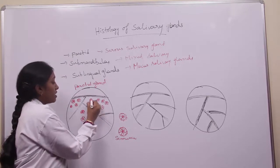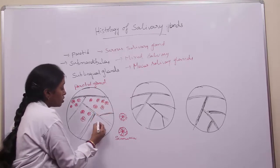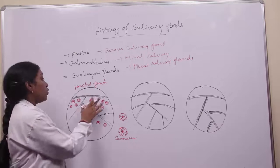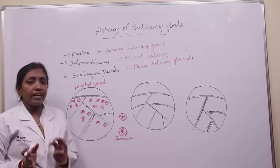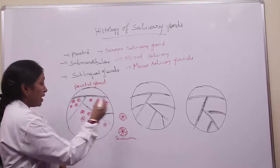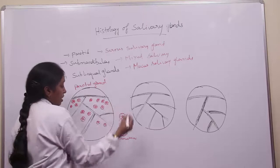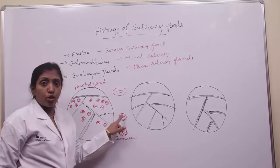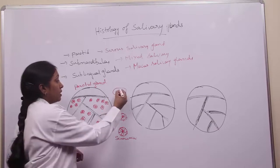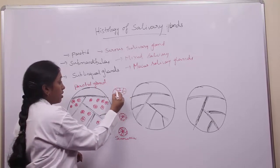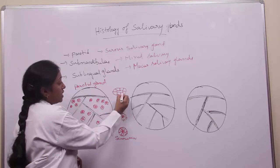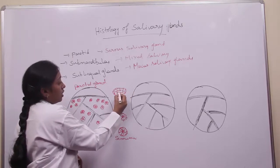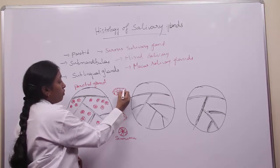Along with the serous acini, you will also be able to see a very few number of mucous acini in the parotid gland. Coming to the structure of mucous acini: they have a large lumen compared to the serous acini. The cells are cuboidal in shape, the nucleus is flattened and situated at the base, and the upper part of the cell consists of more number of mucus granules.